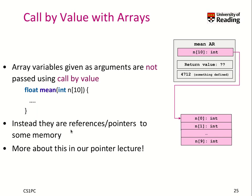We will learn more about this in the pointer lecture. When you look at the activation record for the mean function, you would see this variable n, which is this array. But the values of this array are not stored on the same stack frame — instead they are somewhere in memory, and we have this interaction using a pointer.